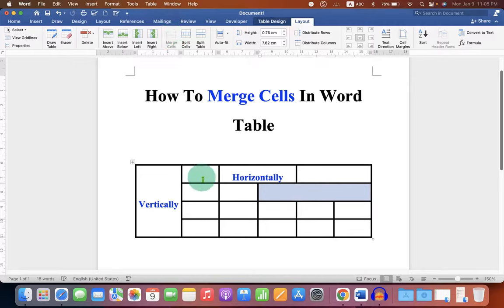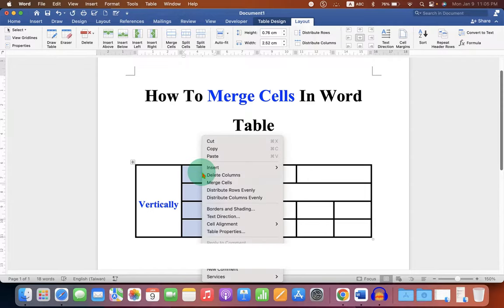If you want to merge cells horizontally, select the horizontal cells and this is the second method. Right click on the cells and you will also see the option of Merge Cells here.